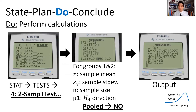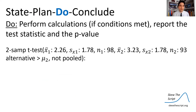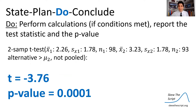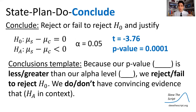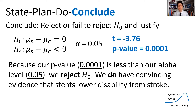To perform the calculations, you could do it by hand as my father showed, but there's an easier way on the AP exam — use your calculator. Show what you plugged in: you did a two-sample t-test with the given parameters. Report the t-test statistic: we were 3.76 standard errors away from the null hypothesis. Then report your final p-value. Finally, draw a conclusion: since our p-value of 0.0001 is way less than our alpha of 0.05, we reject the null hypothesis — we have convincing evidence that stents lowered disability from stroke.